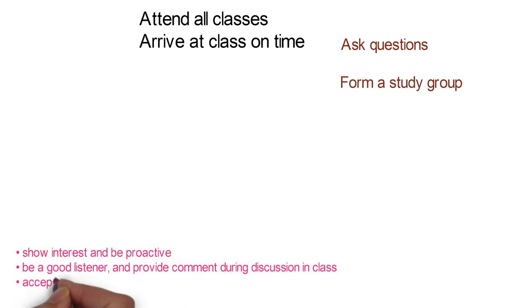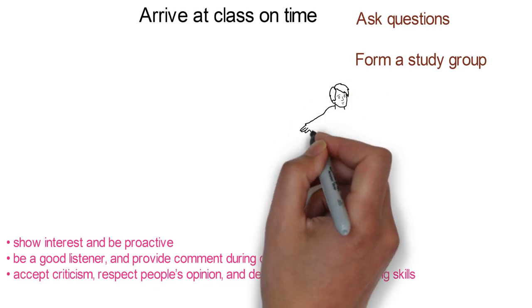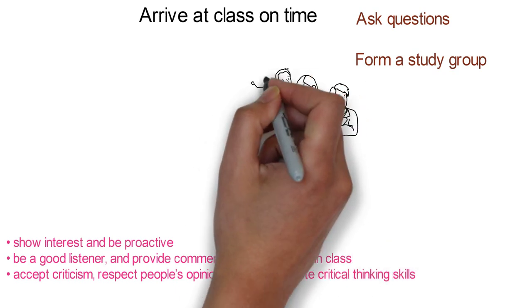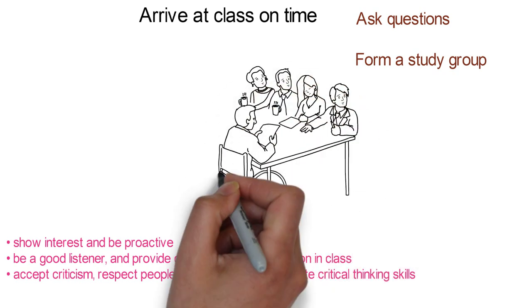Communicating with your peers and academics, make sure to show interest and be proactive. Be a good listener and provide comments during discussions in class. Accept criticism, respect people's opinions, and demonstrate critical thinking skills.